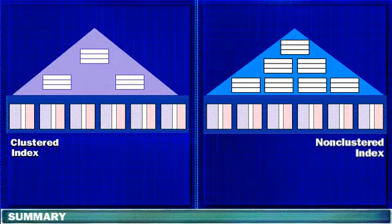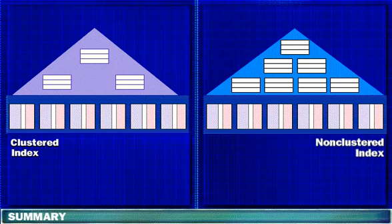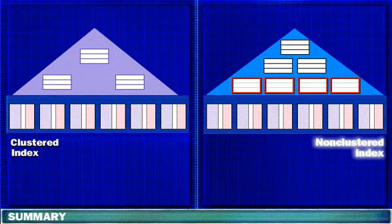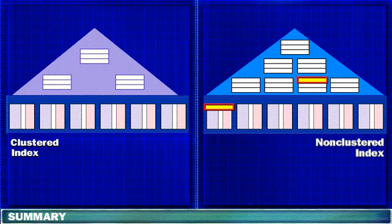In summary, the leaf level of a clustered index is the actual data page. Data is physically stored on a data page in ascending order. The leaf level of a non-clustered index contains key values, not the actual data. These key values map to pointers or clustering keys that locate rows in the data pages.